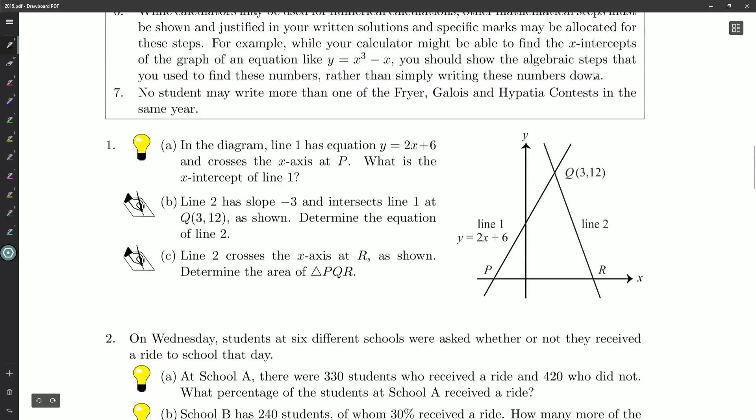Question number one here is one light bulb and two written parts. Part A: In the diagram, line one has equation y equals 2x plus 6. That's this line here and crosses the x-axis at P. What is the x-intercept of line one? So what are the coordinates of P is basically what they're asking.